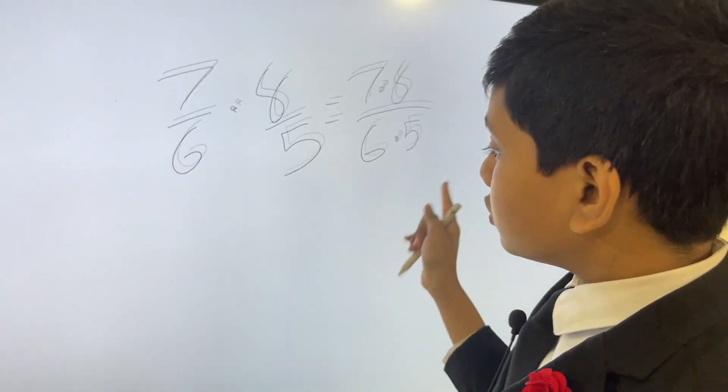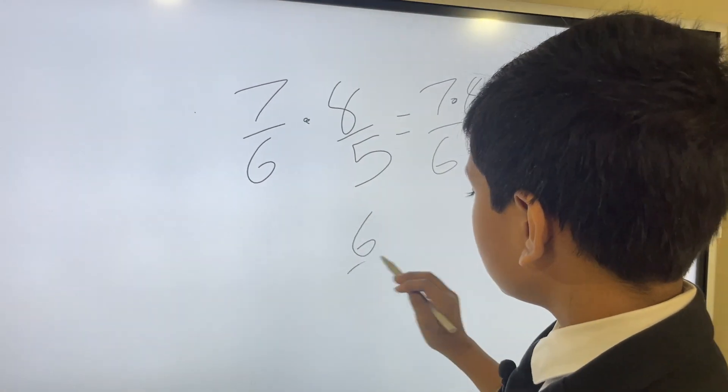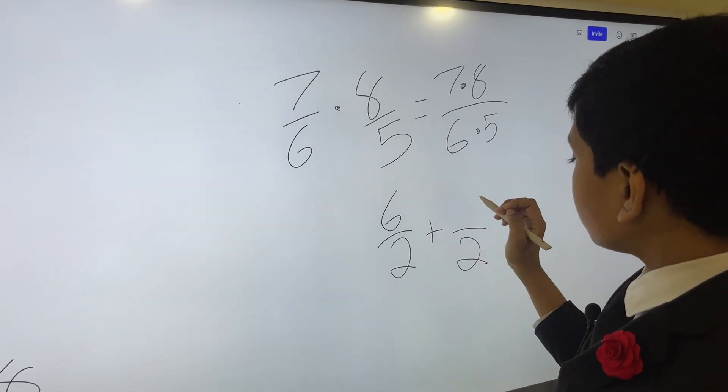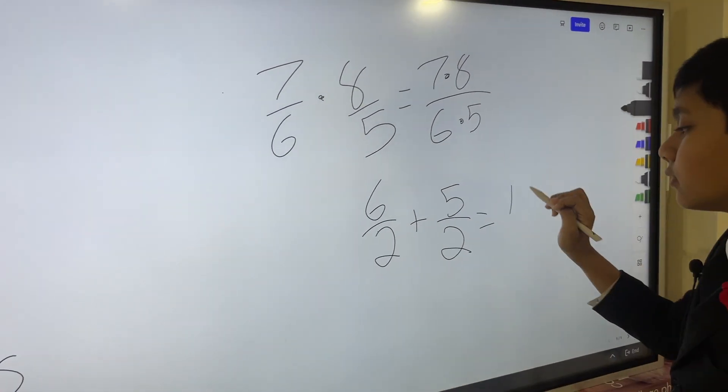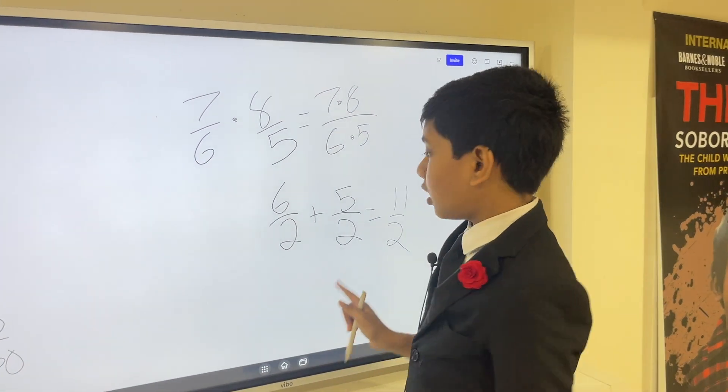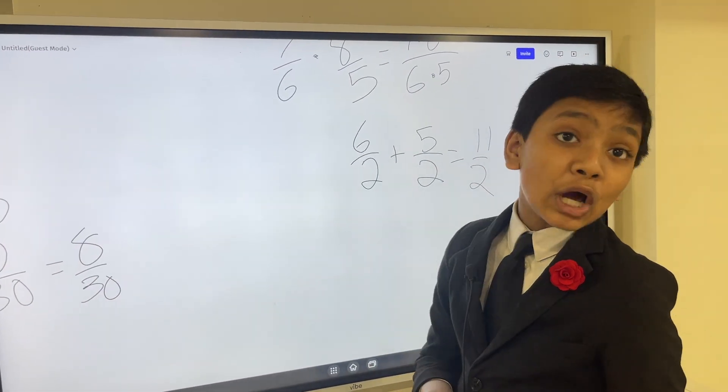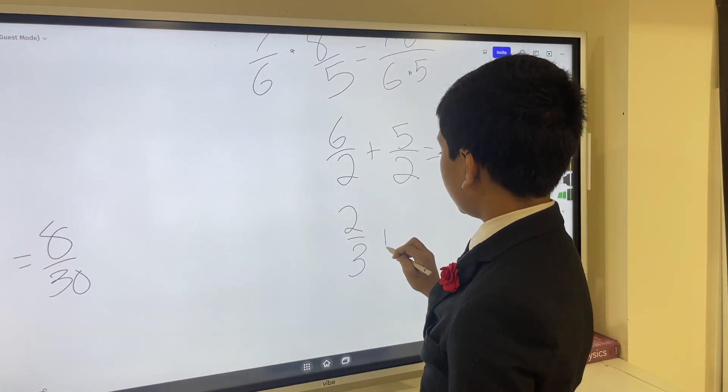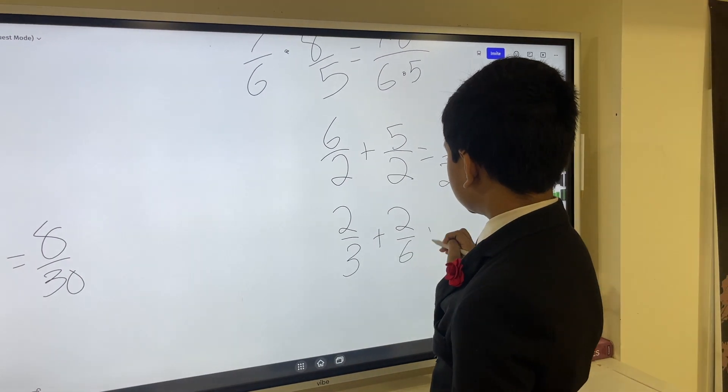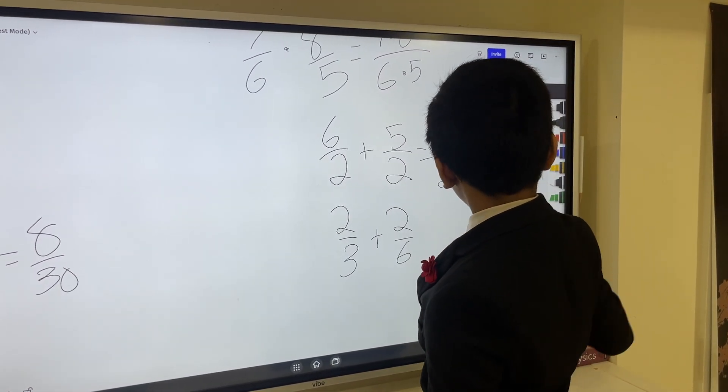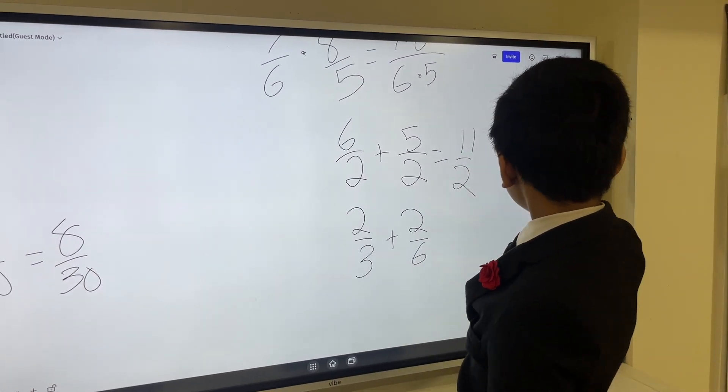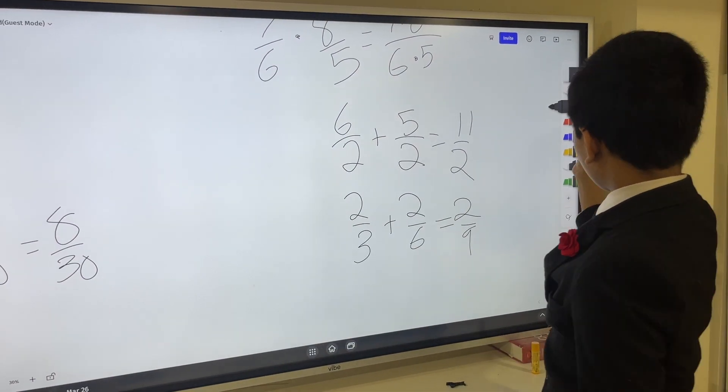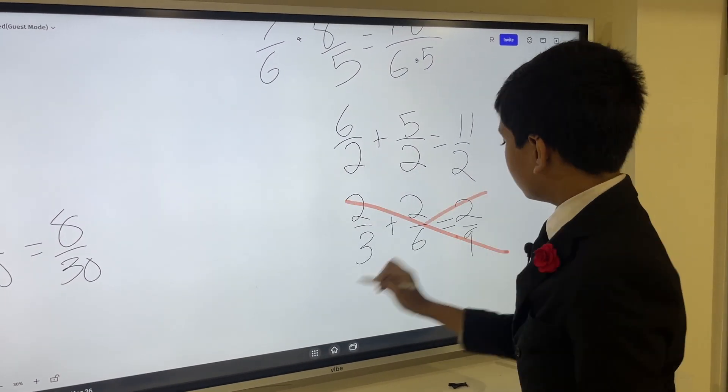You can add the numerators if they have something in common, if they have a common denominator. You cannot add the denominators if they have a common numerator. 2 over 3 plus 2 over 6 is in no way equal to 2 over 9. So, just remember, don't do that.